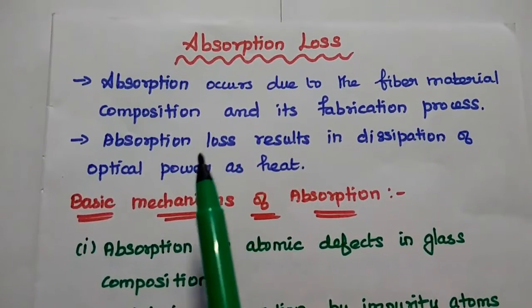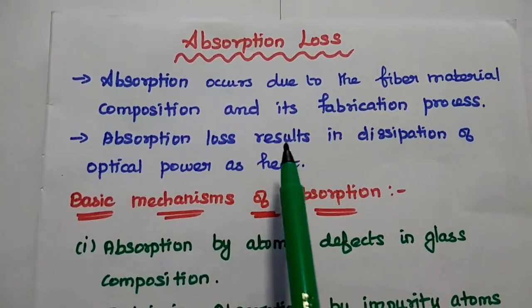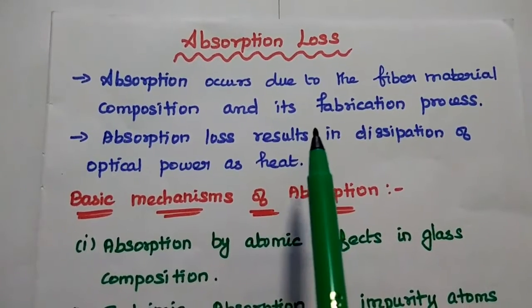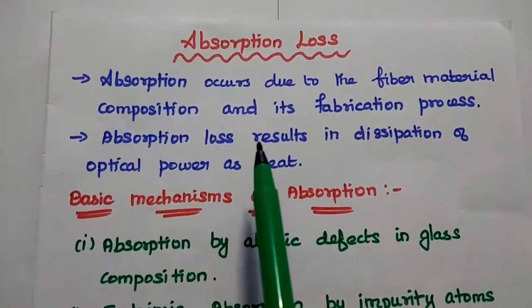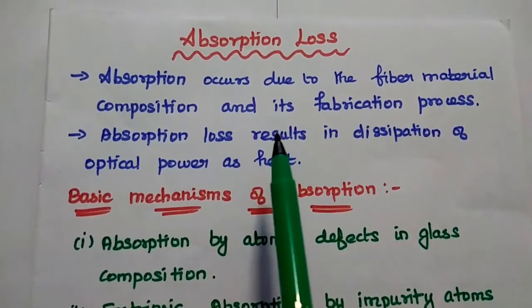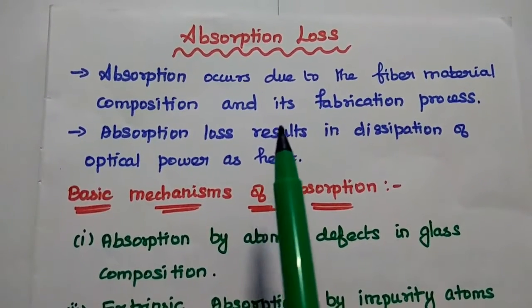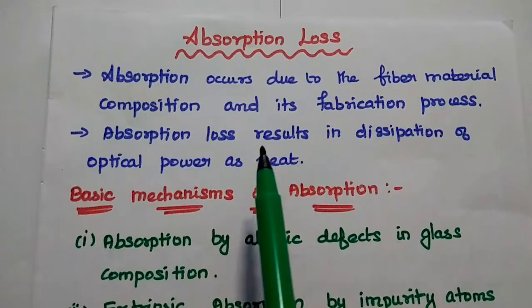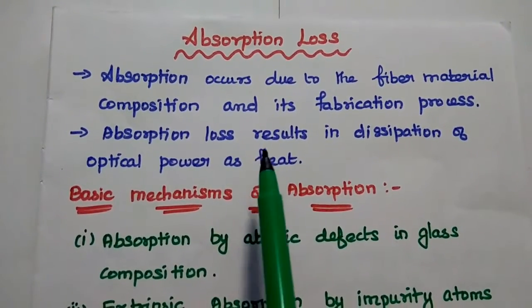In general, the glass fiber is widely used for optical communication. This glass fiber is extremely pure, but at the same time it has some impurities. Due to these impurities, there is some absorption loss.